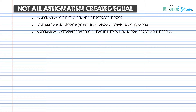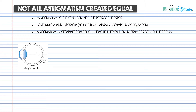In astigmatism, there are two separate point foci, each of which will fall on, in front of, or behind the retina. There are a number of different combinations, and every single one will have specific symptoms and specific things you should think about as an optician. People tend to paint astigmatism with one brush, but every single type has a different symptom. I'm going to show you a very easy way to understand this and to start thinking outside the box about these types of astigmatism.